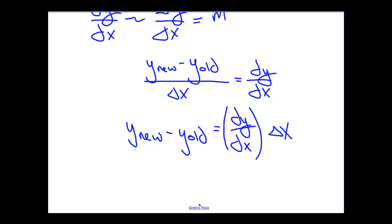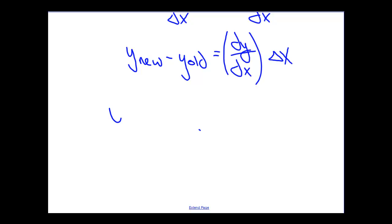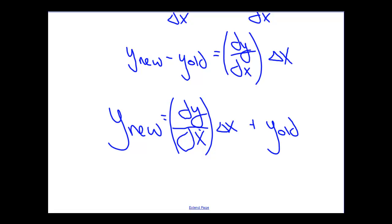Or if we are interested, we can determine what the new y value is by taking the slope dy dx times delta x plus the old value. And this is, in essence, what we're going to do. This is our formula that we will use to apply Euler's method.